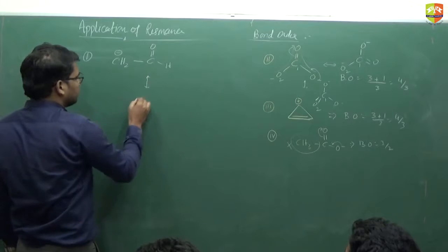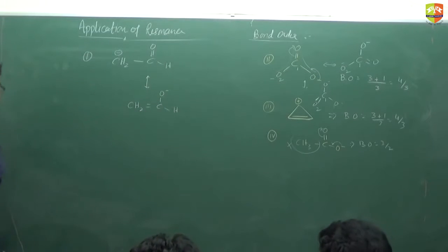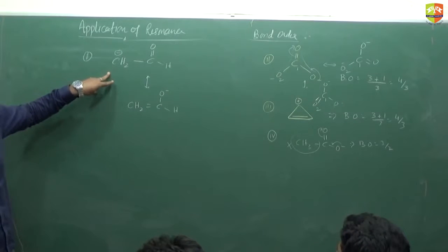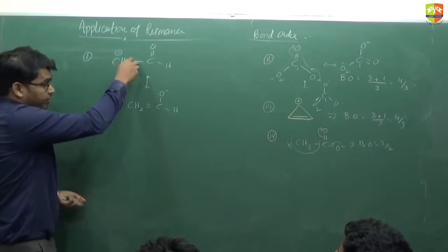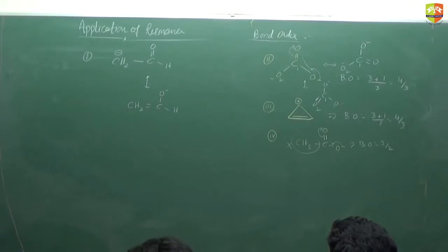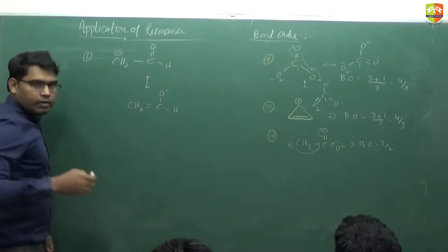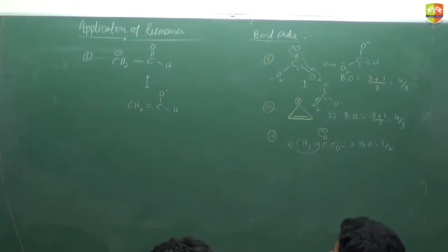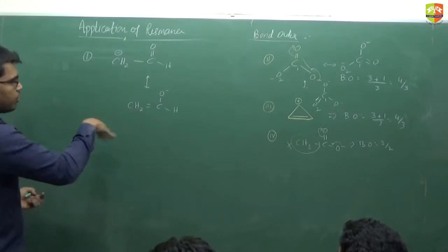The resonating structures of this are: CH₂=O⁻ and an H form. Are these equal contributing? How do we find out if they are equal contributing or not? If the stability is the same, they are equal contributing. Here they do not have the same stability — we use the rules of relative stability of resonating structures. This one is less stable because of the negative charge. The other one has the pi bond on oxygen — negative charge on oxygen is more stable, so it contributes more.